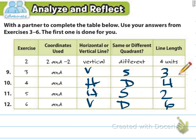For problem nine, the line was vertical, same quadrant, and three units. For exercise four, number ten, it was horizontal, different quadrants, and four units. For number eleven, it was horizontal, same quadrant, and two units. For number twelve, it was vertical, different quadrants, and six units. Remember: when the points are in the same quadrant, you subtract; when they're in different quadrants, you add their absolute values.